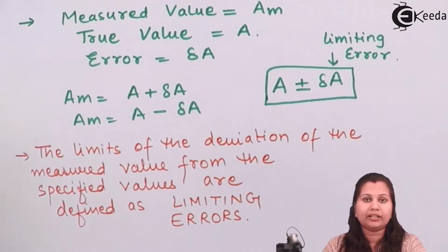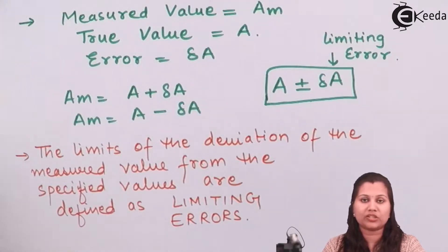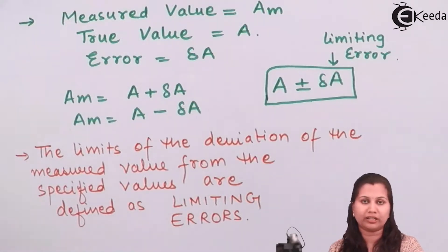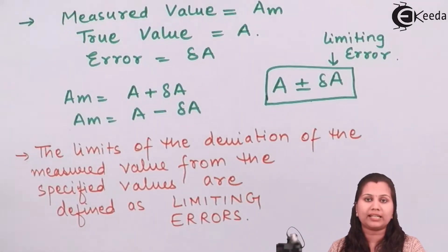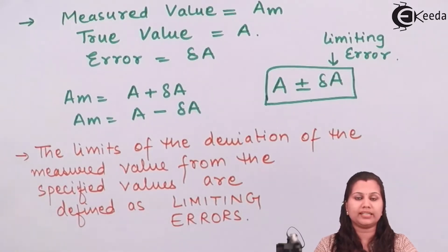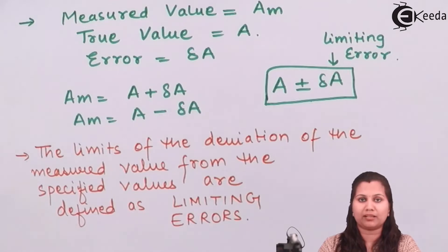So there are three ways to express errors in measurement: absolute error, which is simply the difference between the measured and the true value; relative error, which is the ratio of the absolute error and the true value; and we can also express it as percentage relative error and limiting error, which defines the limits within which the values of the unknown quantity can lie. In this video, we studied the various types of errors in measurement. I hope this topic is clear to you. Thank you.